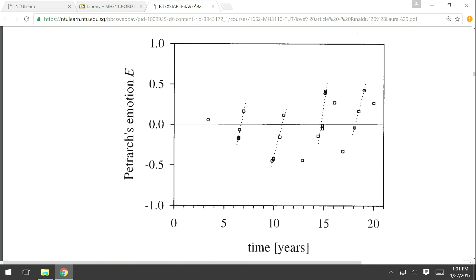The horizontal axis is time in years and the vertical axis is Petrarch's emotion. If you look at 15 years, there are some dots very close to the zero line, meaning these poems sound neutral. Those dots below or above the t-axis are respectively desperate or hopeful.